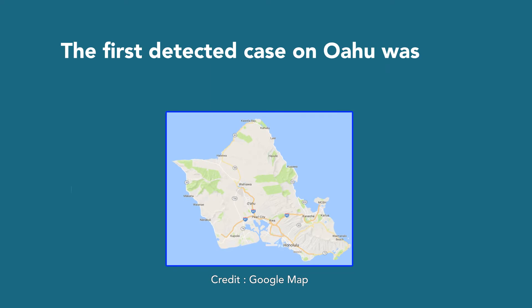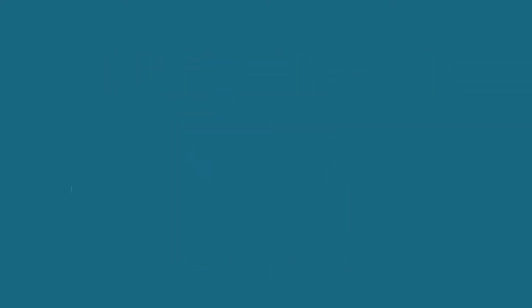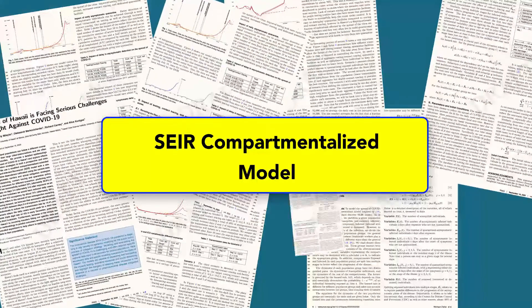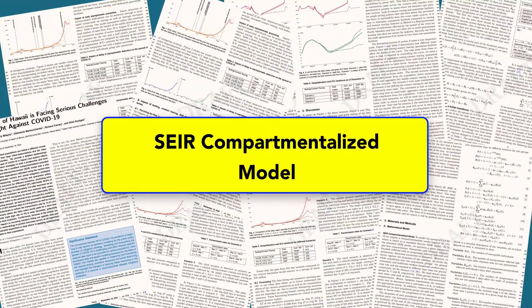The first detected case on Oahu was on March 6, 2020. A SEIR compartmentalized model has been developed by mathematicians at UH to fit the daily cases, optimizing over the transmission rate based on various mitigation measures that took place.